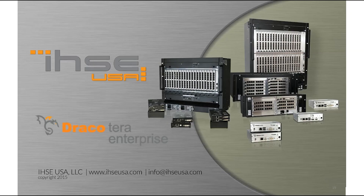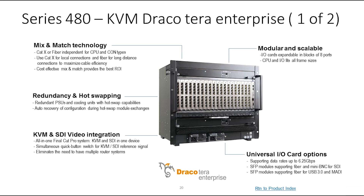The second switch family is the enterprise switch. The enterprise switches range from 48 to 576 ports and are even more flexible. Since we are MAC address based, our power supplies, cooling fans, I/O, and control modules are all hot-swappable. Each module has a MAC address which automatically identifies and configures the switch if any changes are made, meaning no IP configuration or lost time.